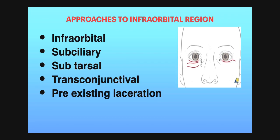Approaches to the intraorbital region include various incisions: intraorbital incision, subciliary incision, subtarsal incision, transconjunctival, or through a pre-existing laceration. In this picture, C shows the intraorbital incision, B shows the subtarsal incision, A is the subciliary incision, and D is an extension of the subciliary incision.